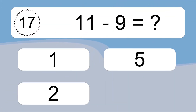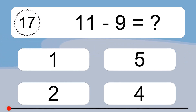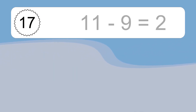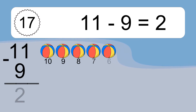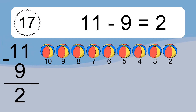11 minus 9 equals what? 11 minus 9 equals 2. Let's count it: 10, 9, 8, 7, 6, 5, 4, 3, 2.